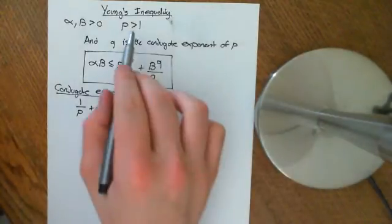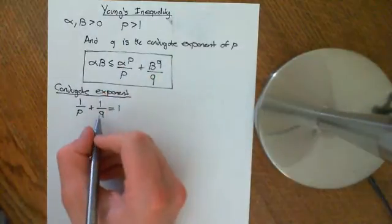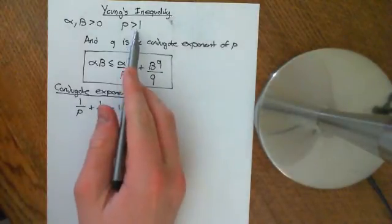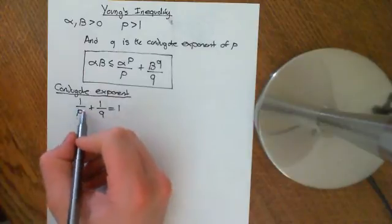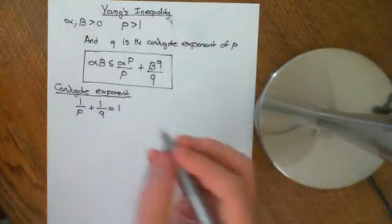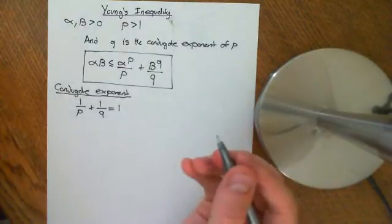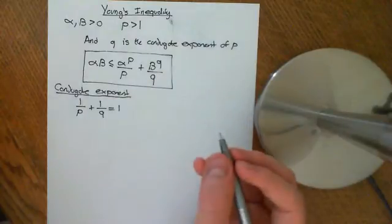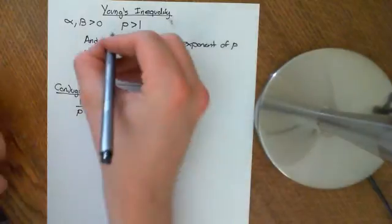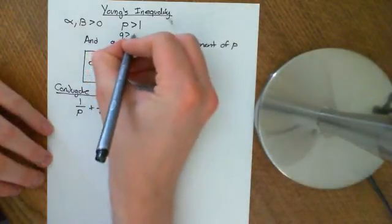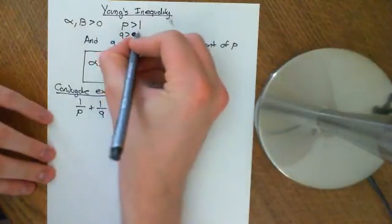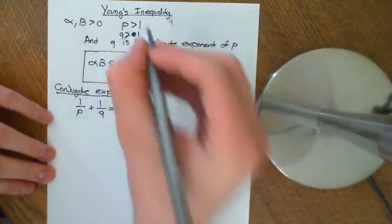This will have a solution — there will be some real number q which satisfies this — providing p is greater than 1. Because if p is greater than 1, then 1 divided by p is less than 1, so 1 minus 1 over p is going to be some positive number. So there will be a q which is positive and in fact greater than 1 that satisfies this.